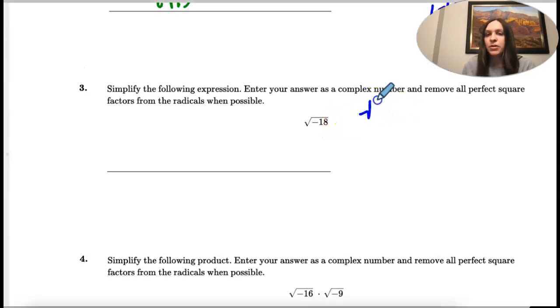So remember the square root of negative 18. I can write that as i and then positive square root of 18. So just changing the negative to a positive and then write the i out front.